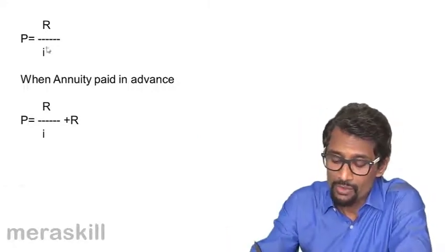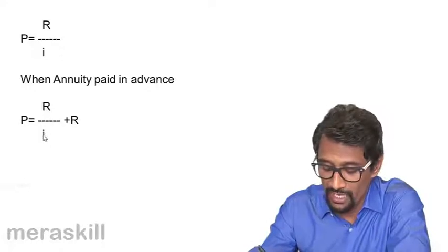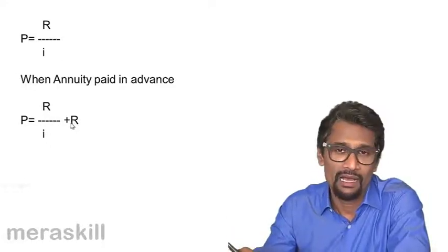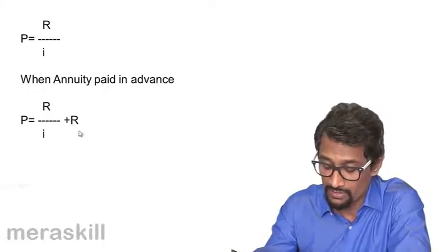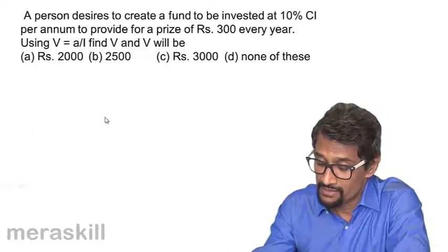So P is equal to R upon I. In case of annuity paid in advance, you find R upon I plus R, because the first installment will not incur any interest. For example,